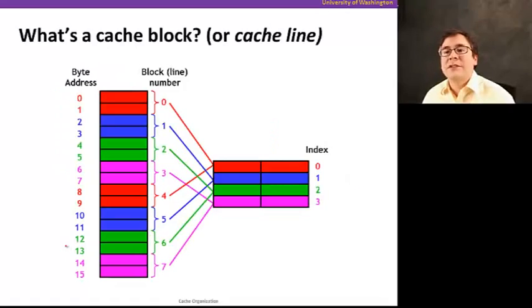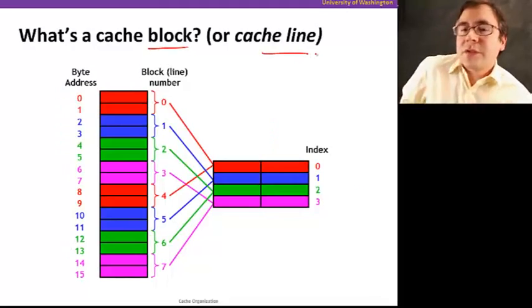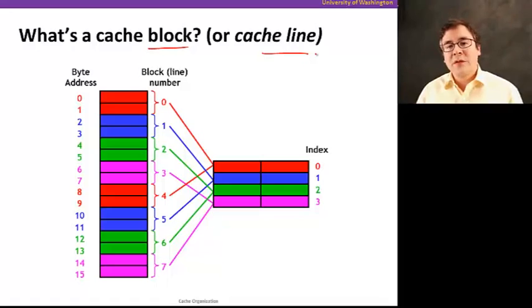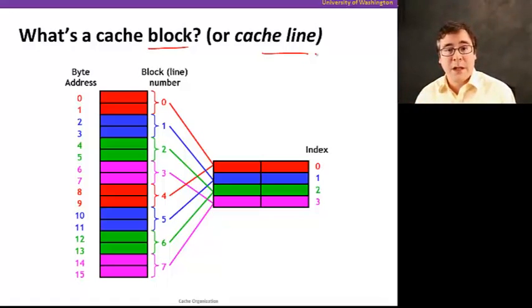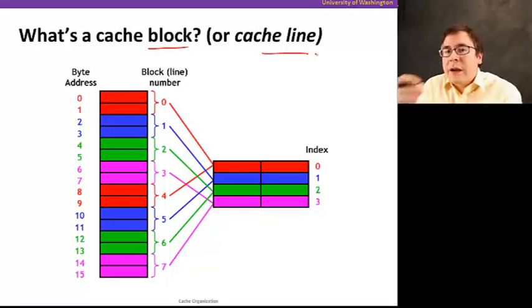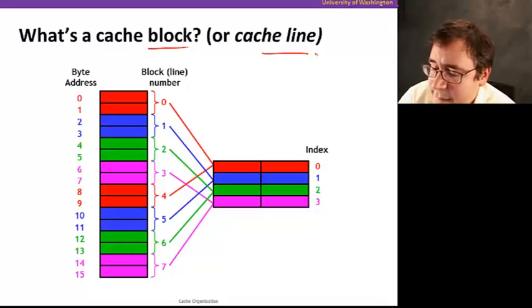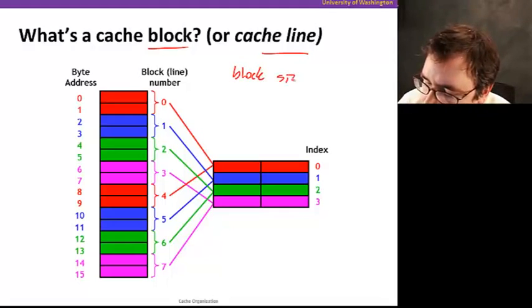A very important question in a cache is: what's a block or a cache line? Remember when we talked about spatial locality — we said that we move data from memory to the cache in blocks that are bigger than a single byte. That helps spatial locality because we bring not only the piece of data actually needed by the program, but also data located close by in memory.